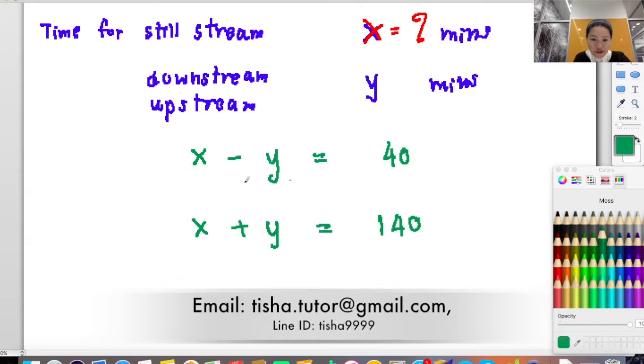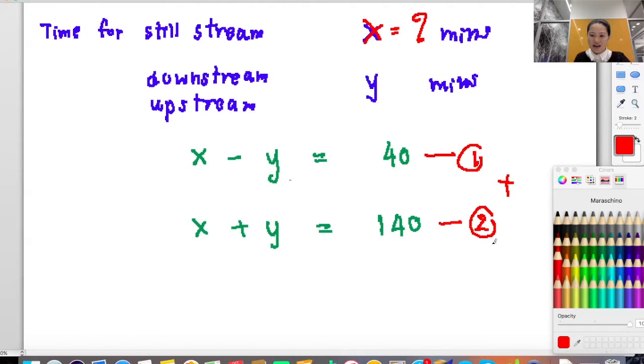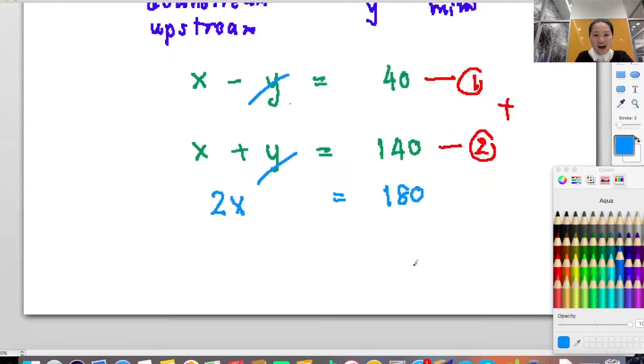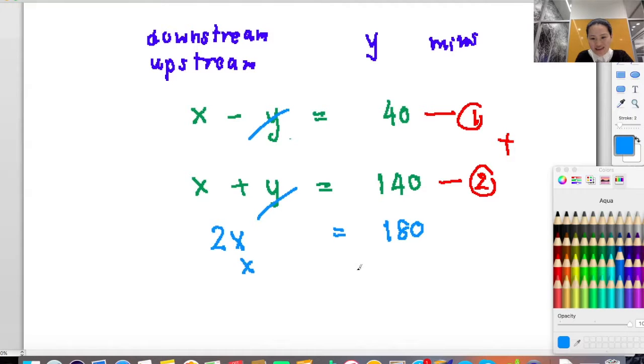I want to find x, so I set up equation one and equation two. I plug them together. x plus x is 2x. Negative y plus y is gone, zero. 40 plus 140 is 180, so x equals 180 over 2. Cut them, so x equals 90.